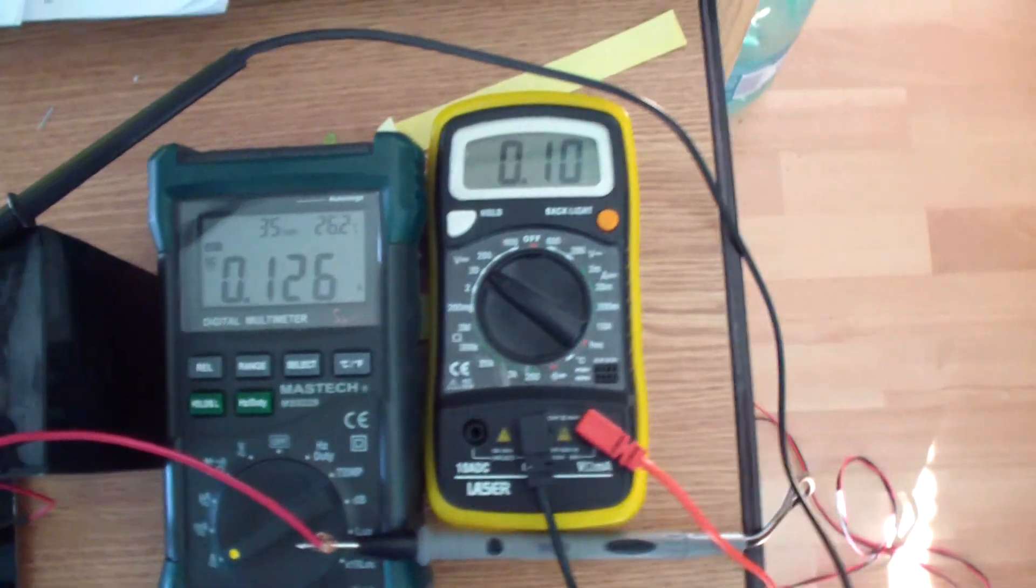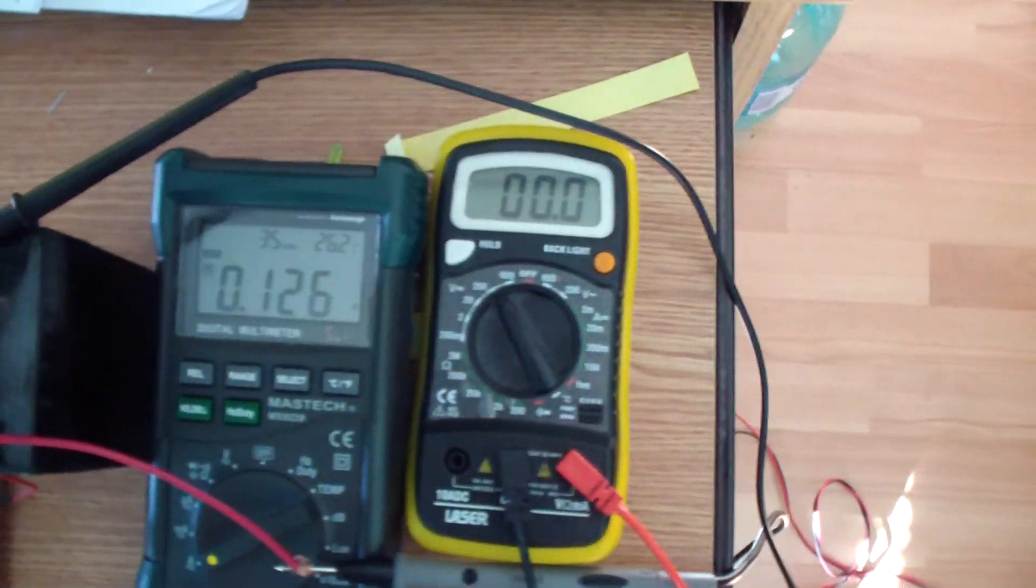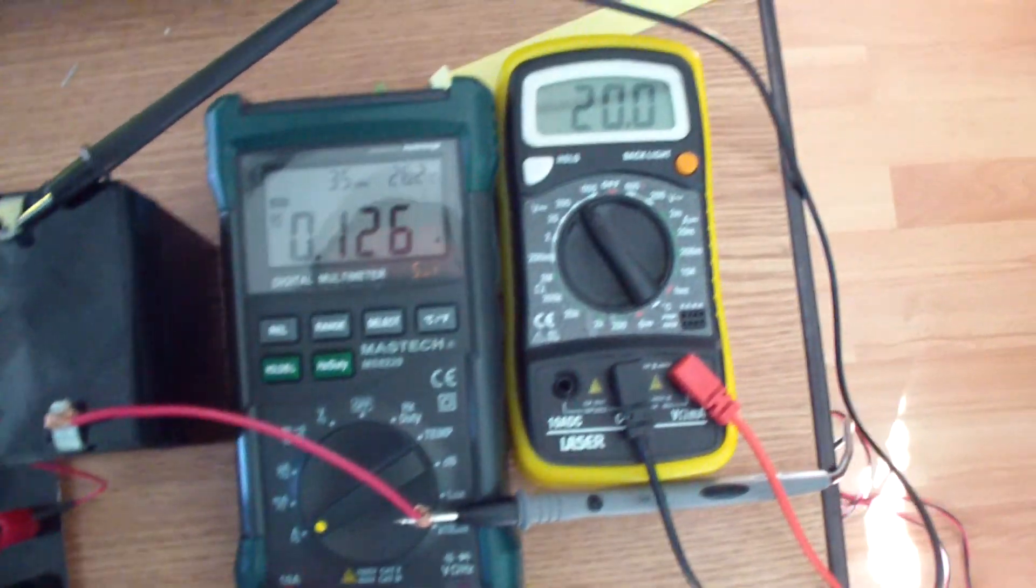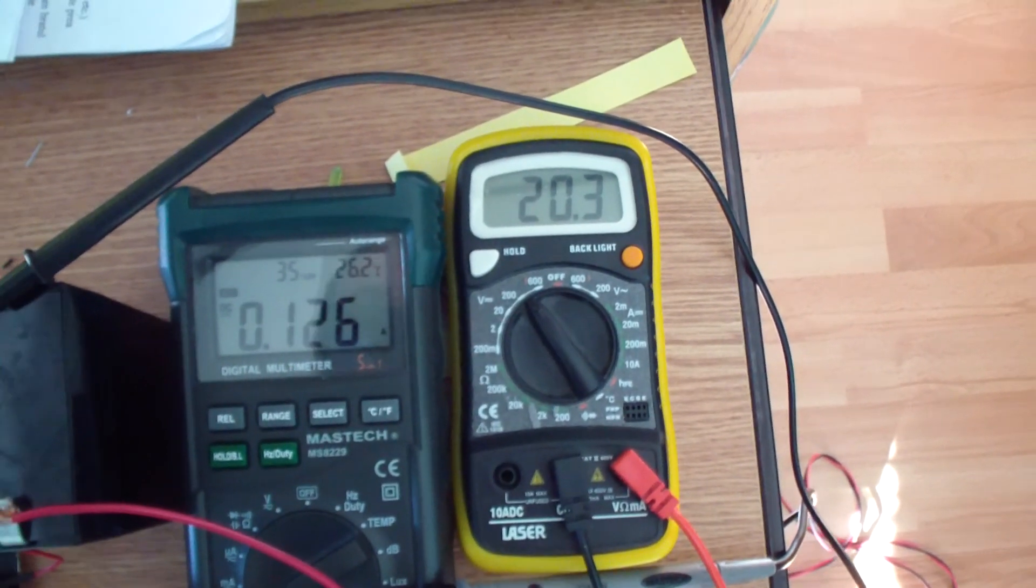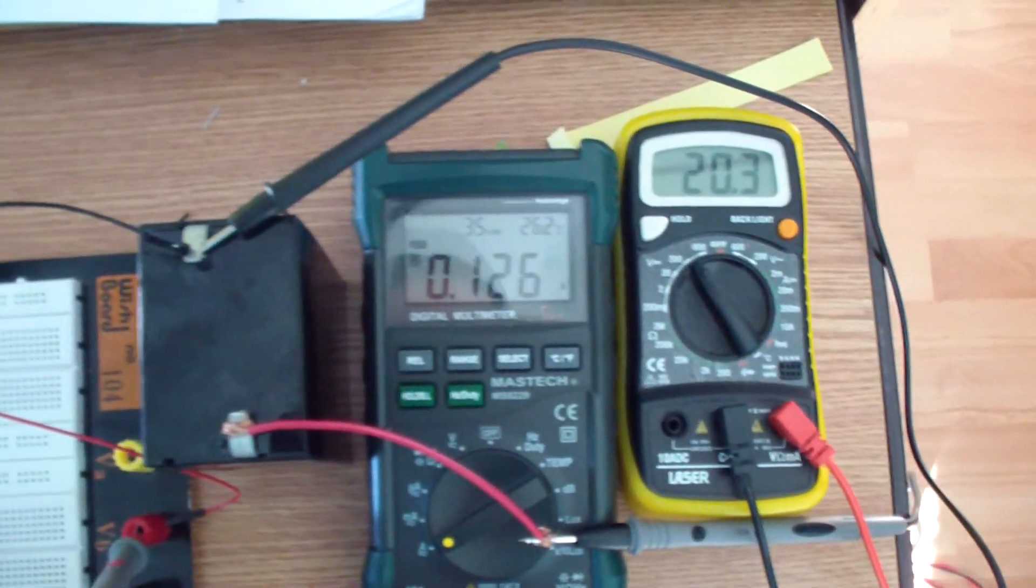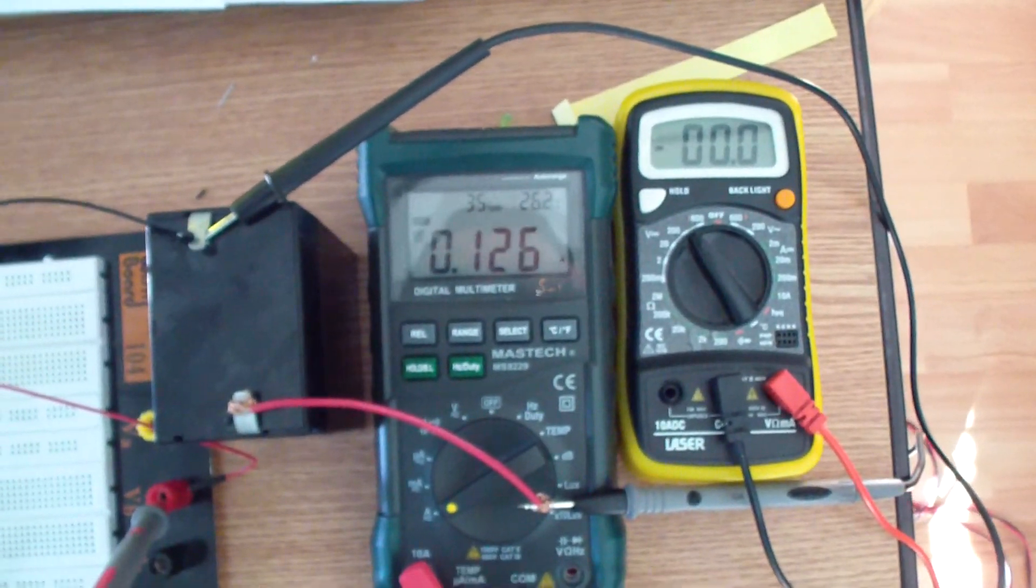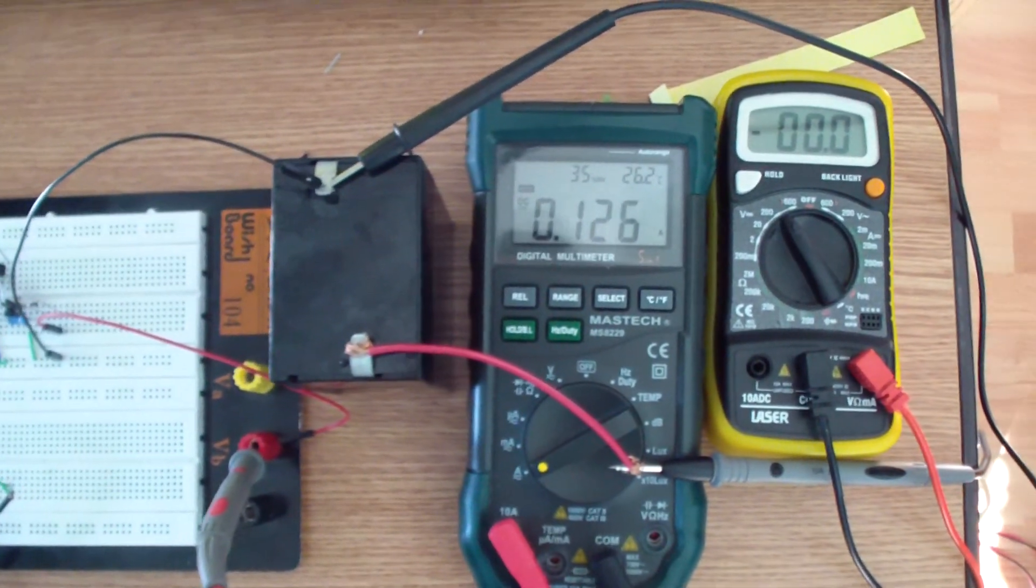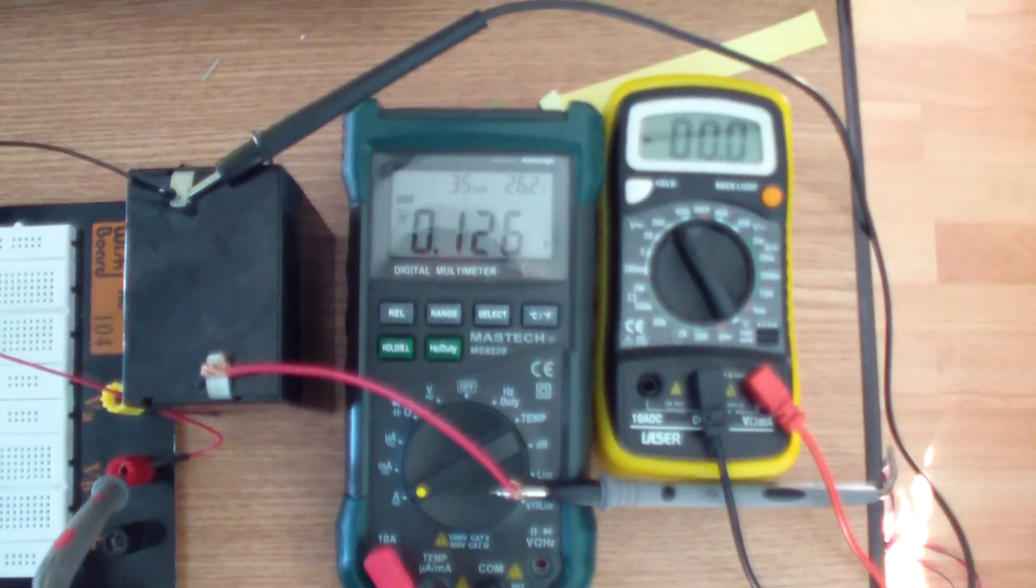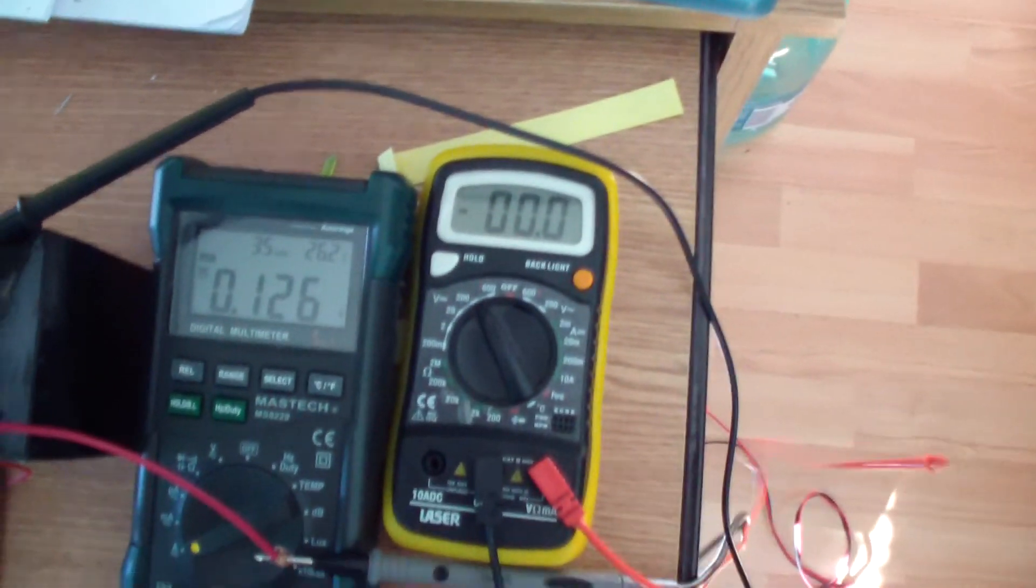Something's wrong with my multimeter. Now it cannot be 20 volts because my solar panel is rated at 17 volts open circuit, so probably this multimeter is malfunctioning.